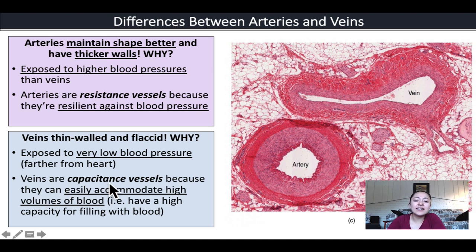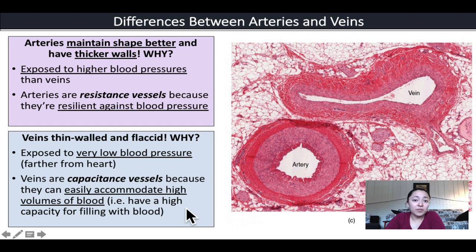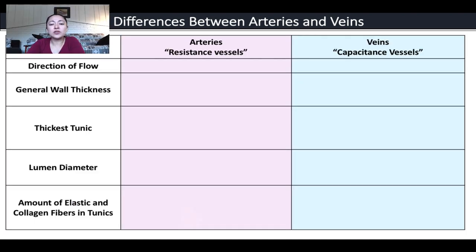Veins are called capacitance vessels because, although they can't withstand high blood pressure, they can easily stretch and stay stretched, accommodating high volumes of blood. Most of the blood in your body at any given time is stored in your veins because there is little blood pressure to keep it moving. Arteries are resistance vessels; veins are capacitance vessels with a large capacity to hold blood.